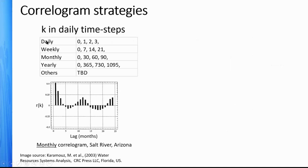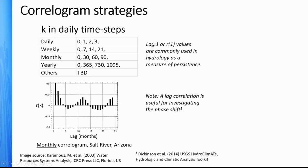Depending on your strategy, you might look at daily time steps, weekly steps jumping 0 to 7 to 14, monthly every 30 days, or yearly. Here's a correlogram using monthly time steps for the Salt River in Arizona — we have the ones up here, then after a one-month shift we get this kind of pattern. Lag 1 is most commonly used in hydrology as a measure of persistence. Lag correlation is also useful in investigating a phase shift, or a shifting forward or backward over time.